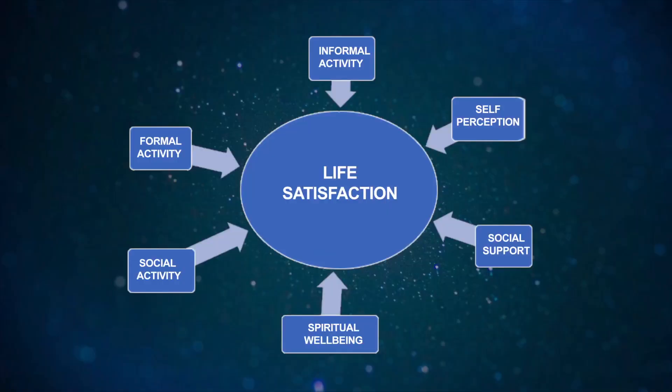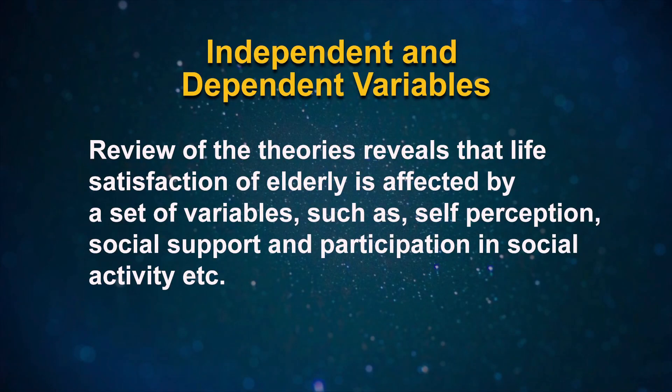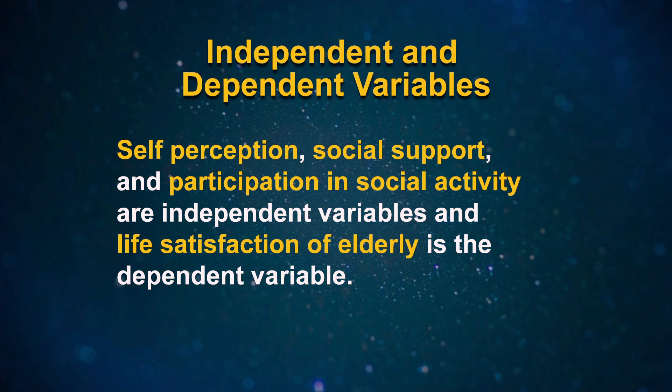We can now develop a theoretical framework of our study. First, we examine the interrelationship between concepts, constructs, and variables. Based on activity theory, a hypothetical interrelationship between concepts, constructs, and variables is shown. Review of the theories reveals that life satisfaction of elderly is affected by a set of variables such as self-perception, social support, and participation in social activity — which are independent variables — while life satisfaction of the elderly is the dependent variable.